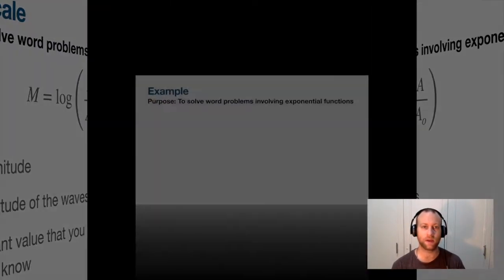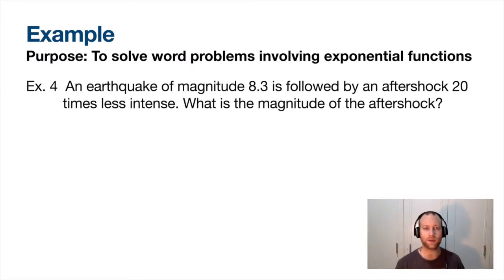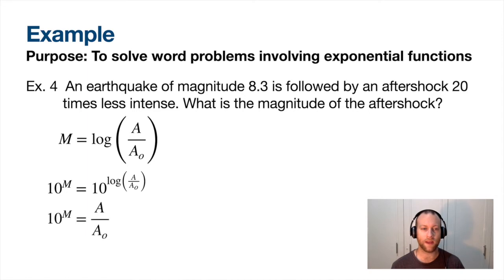We've got an earthquake of magnitude 8.3 and it has an aftershock that's 20 times less intense. Before I can actually solve this, because 20 is comparing the initial earthquake and the next one, it's comparing the amplitudes or the intensity of it, I need to first isolate A by itself to be able to compare those two. I'm going to do some algebra here: do 10 to the power of to cancel out that log, and then I can isolate A. This is something you should be able to do pretty quickly without a problem.